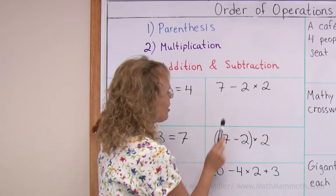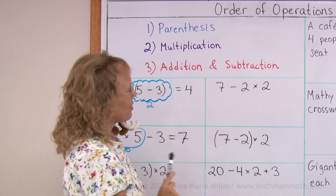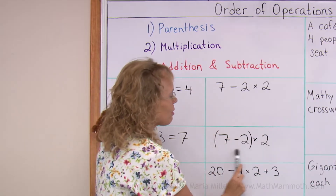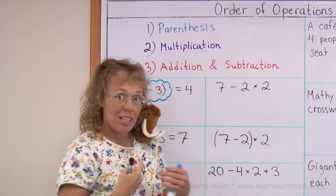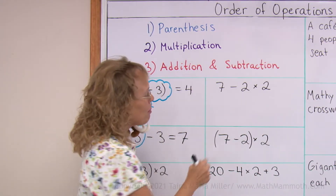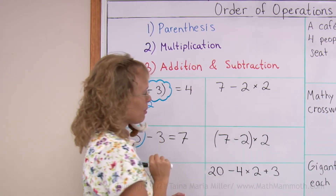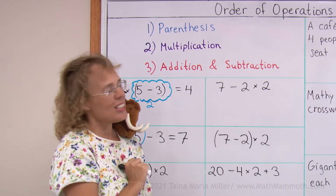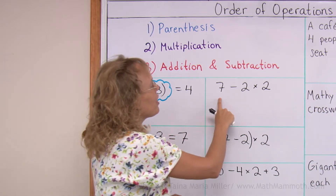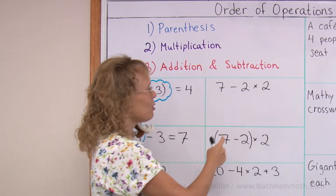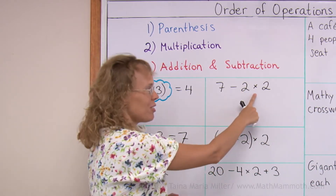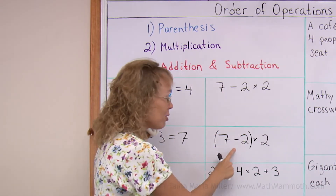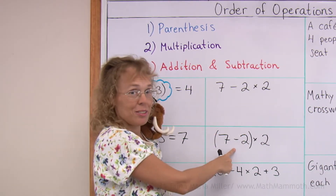Look at these two carefully. This one and this one — they have the same numbers and operations but this one has parentheses. So over here we need to do multiplication first, and over here we need to subtract first.